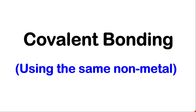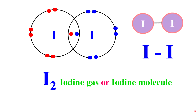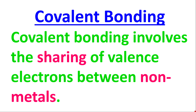By the end of this lesson, you should be able to draw structures like these and at least know how to name a few covalent compounds. Before I go into the examples, I want to deal with some fundamentals. The first thing I want to focus on is how to define covalent bonding. Covalent bonding involves the sharing of valence electrons between non-metals. What you need to take away from this is that electrons are shared between non-metals.